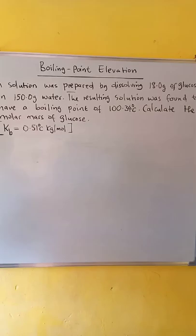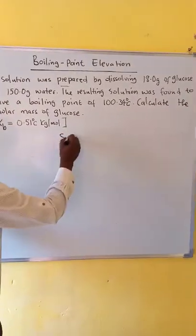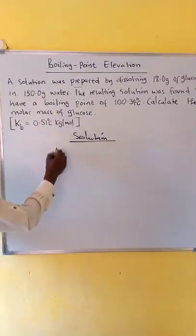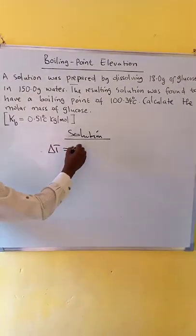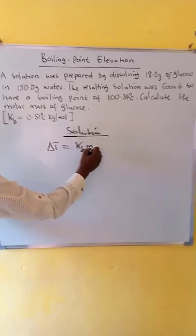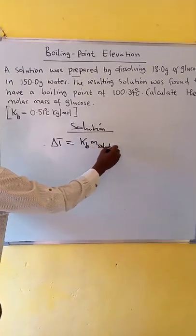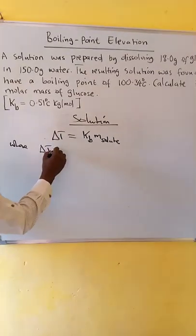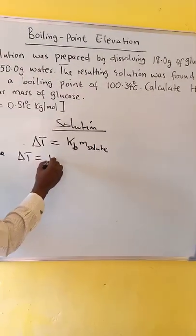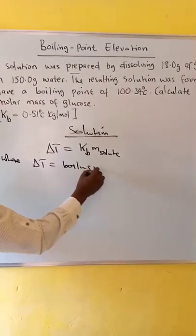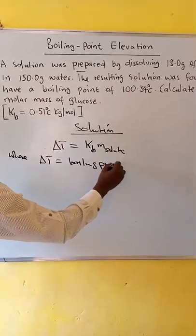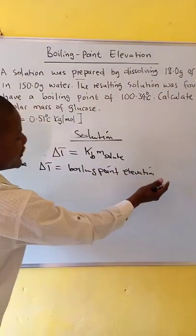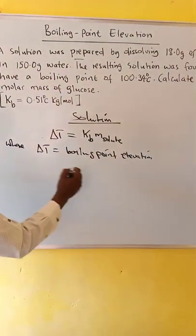Calculate the molar mass of glucose. Solution: we know that ΔT is equal to Kb m solute, where ΔT is the boiling point elevation, or the difference in boiling point of the solution and that of the solvent.